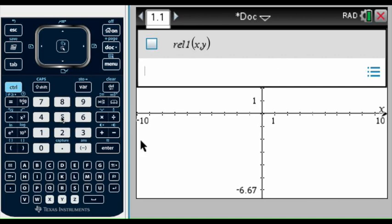So we are going to start with 5x minus 10y equals 8.